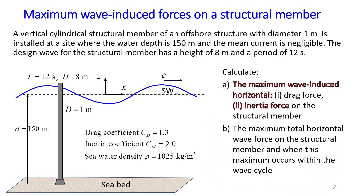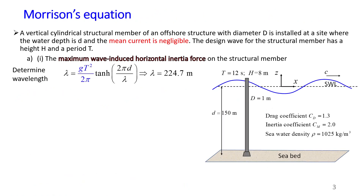First we start with the calculation of wavelength. To calculate wavelength, I use the full equation. As you can see, lambda, which is wavelength, is on both sides of this equation. Therefore, to solve this you need to use an iteration method — you can use a solver on your calculator or in Excel. The wavelength is approximately 225 meters. I show in blue the equation you would use for deep waves as a simplified version, but for this exercise I use the full equation.